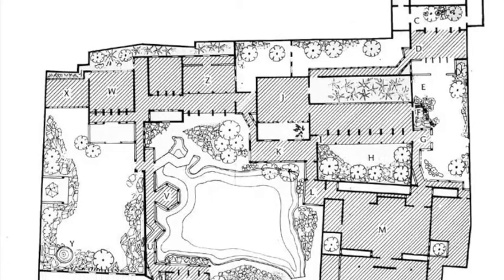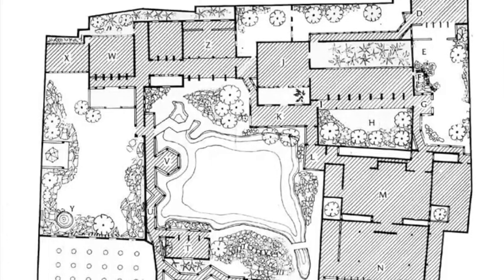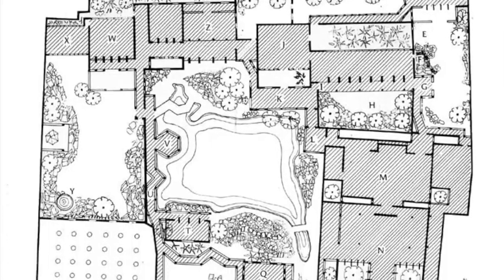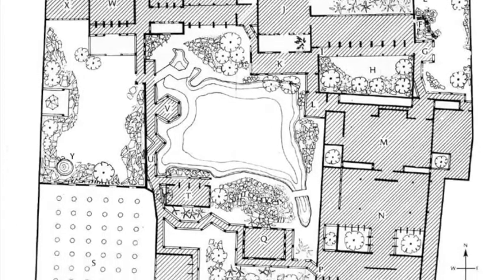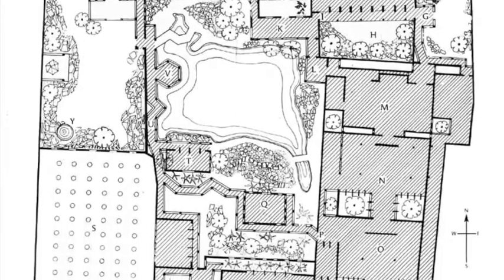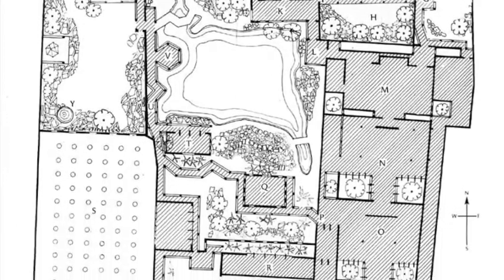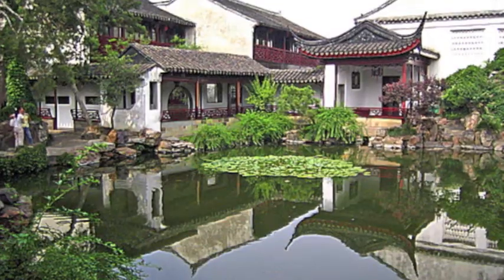This is the plan of Wang Shi Yuan, also called Master of the Fishing Nets. As you can see, there is a central pond that acts as the focal point of the entire garden, with multiple structures surrounding it.